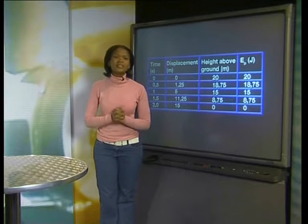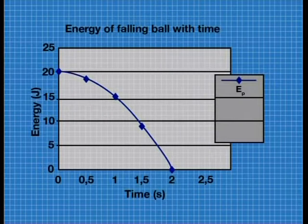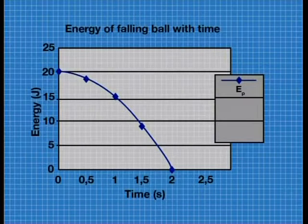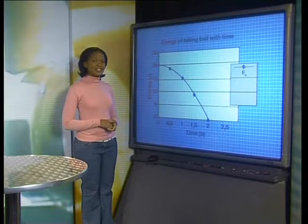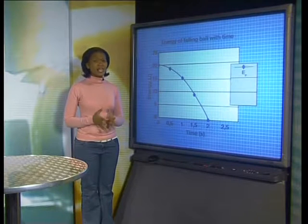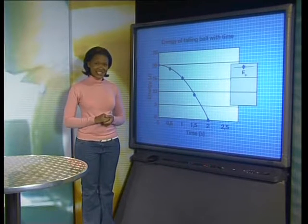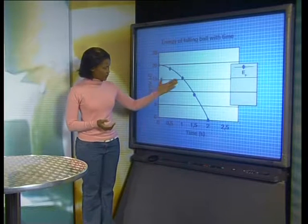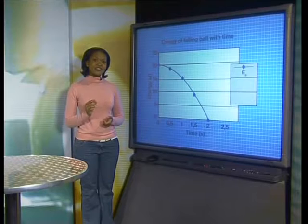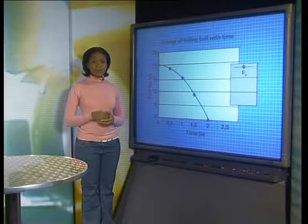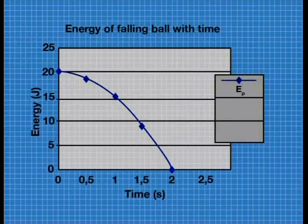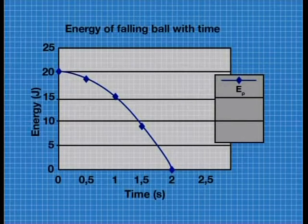Now, to see the change of potential energy with time more clearly, let's draw a line graph. Notice these values of gravitational potential energy do not form a straight line. This means that the potential energy does not decrease at a constant rate. Notice that in the first second, which is half the time for the fall, the decrease in potential energy is only 5 joules. But in the second second, the potential energy decreased by 15 joules. The gradient of the graph is not steep at first but increases with time, so we can clearly see that EP does not decrease in a constant or linear manner.